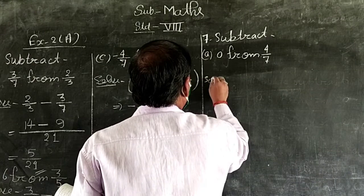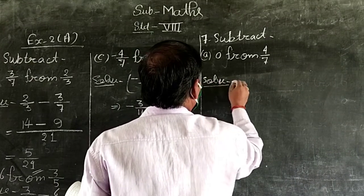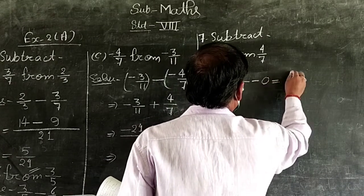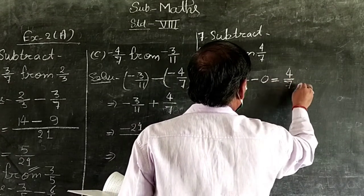Solve: 4 upon 7 minus 0 equals 4 upon 7. Answer.